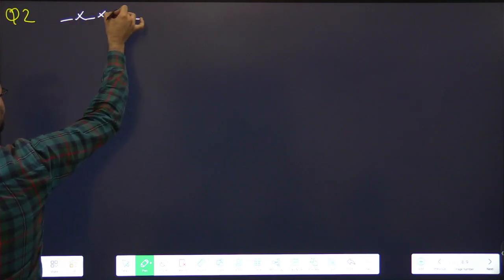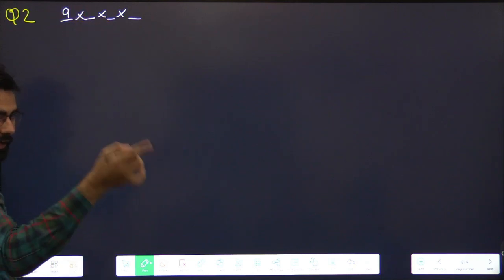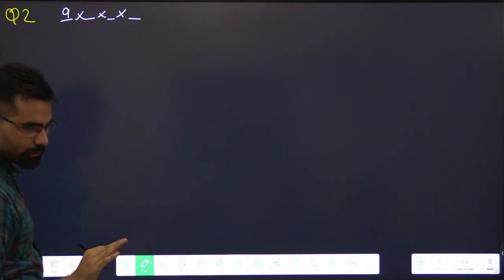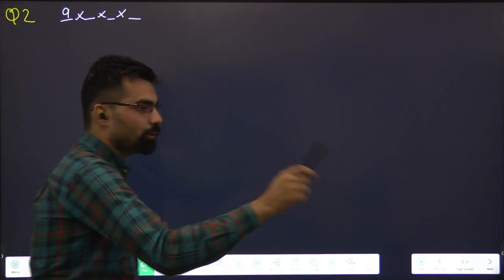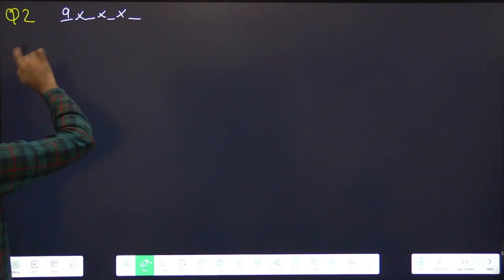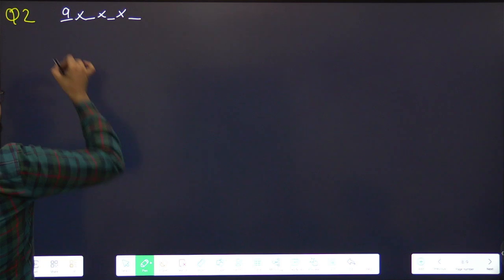How many options for first place? Nine. Second? Nine. Why? How many total digits do I have? Zero from nine - ten digits. Zero doesn't count. First place can't be zero. Point clear? This is nine digits, one to nine. Second place can be zero. Nine.